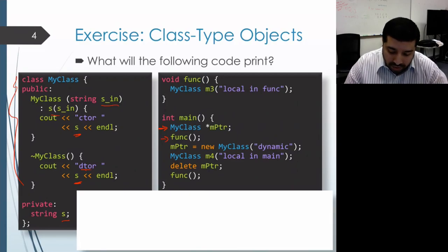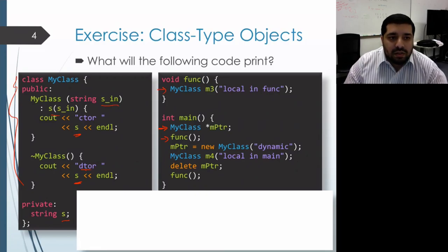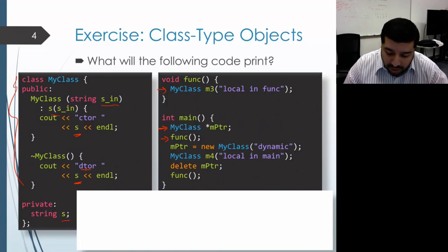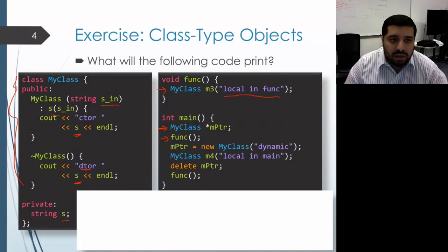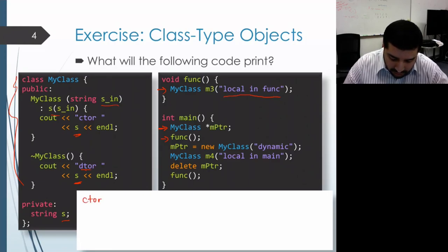The func function creates a local variable of MyClass type, so this does invoke the constructor of MyClass. The string that we pass in is "local in func", so the constructor prints out CTOR and then the string "local in func".